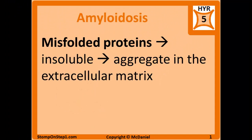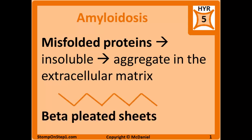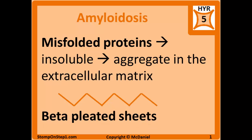We'll start off talking about amyloidosis in some general terms. Amyloidosis is when you've got misfolded proteins that become insoluble and then aggregate in the extracellular matrix as a solid. Amyloidosis is not a single disease — it's a collection of diseases that result from different causes that all end up with some sort of misfolded protein. Classically, these proteins are going to misfold into beta-pleated sheets, which is something you might see pop up in a question.